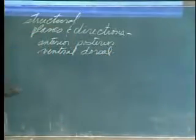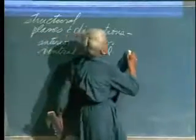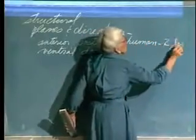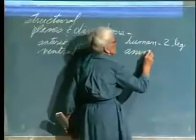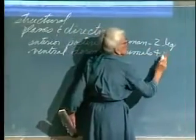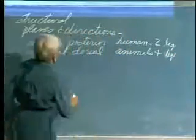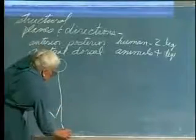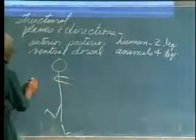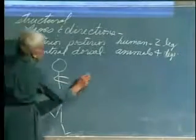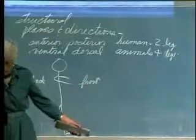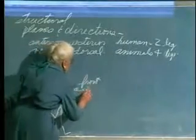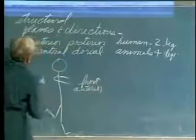We'll show how these terms were derived so you know why they're used the way they are. If we take the human, of course we have two legs. Looking at the human, this is back and this is front. In anatomical position, this will be anterior - front - and back will be posterior.